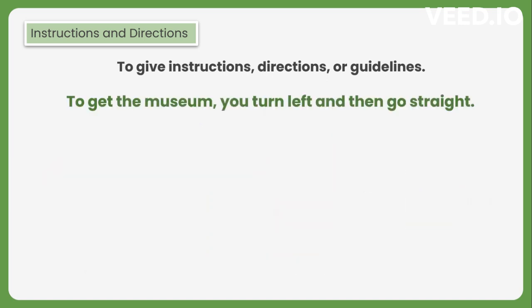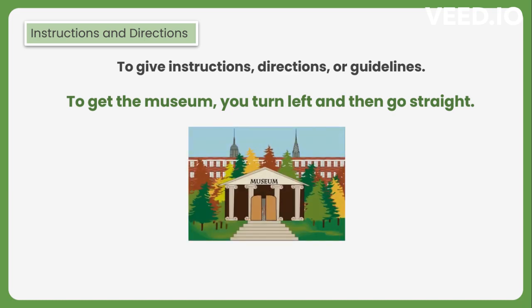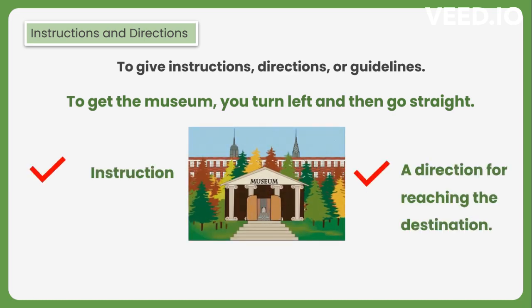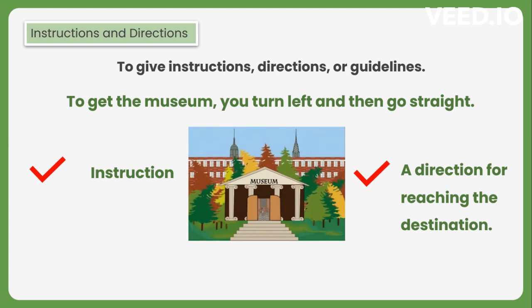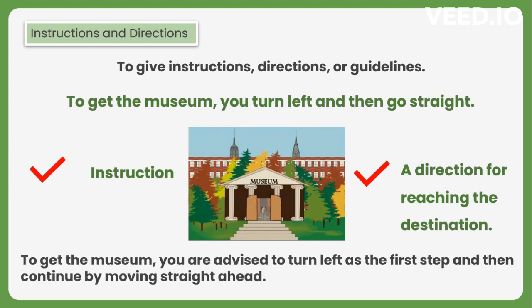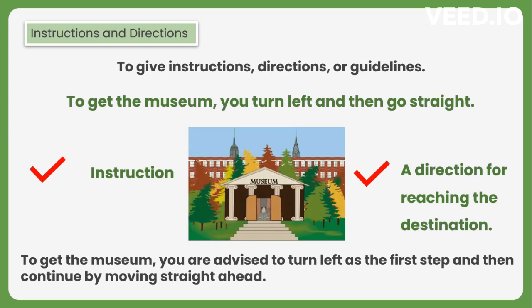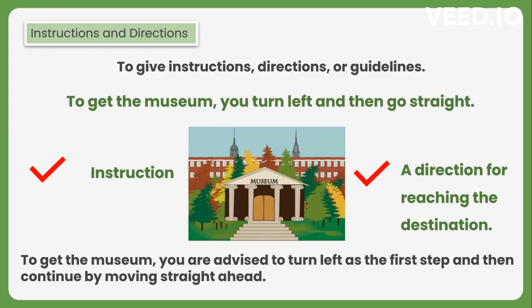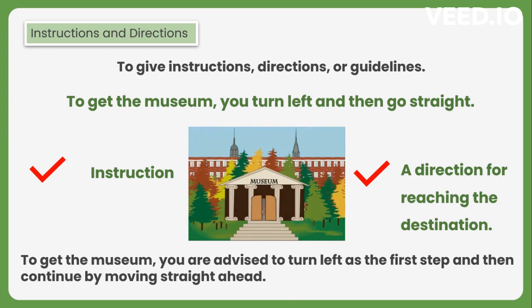To get to the museum, you turn left and then go straight. Here, it provides directions or instructions for reaching a destination. In this case, it means that in order to reach the museum, you are advised to turn left as the first step and then continue by moving straight ahead. Likewise, the simple present tense can be used to give instructions, directions, or guidelines.